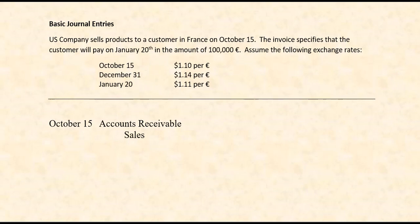You want to debit accounts receivable and credit sales. The problem here is we're allowing the customer to pay in euros. We can't enter euros into our accounting system. In our accounting system in the U.S., we need everything to be measured in U.S. currency — if you try to blend a bunch of currencies, the system would quickly become meaningless. So we have to convert: what would 100,000 euros be if we were to make them pay in dollars right away? You take the exchange rate and multiply it by how many euros they're going to pay you. On October 15, 100,000 euros would be worth $110,000 U.S. dollars. So that would be the journal entry for October 15.